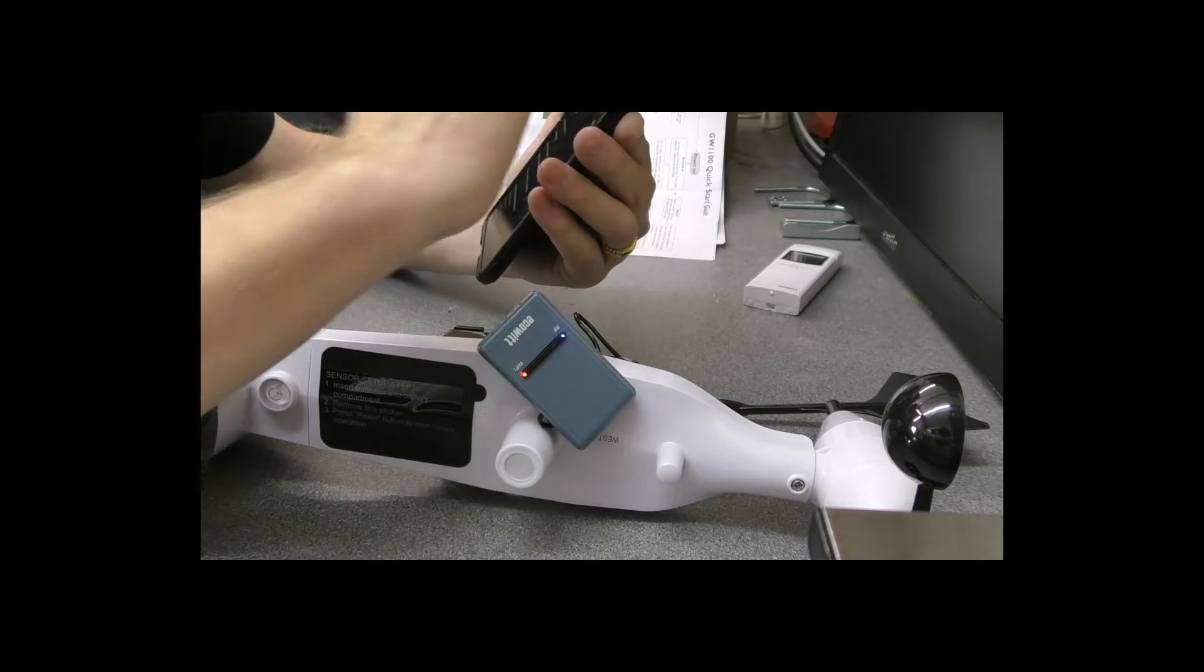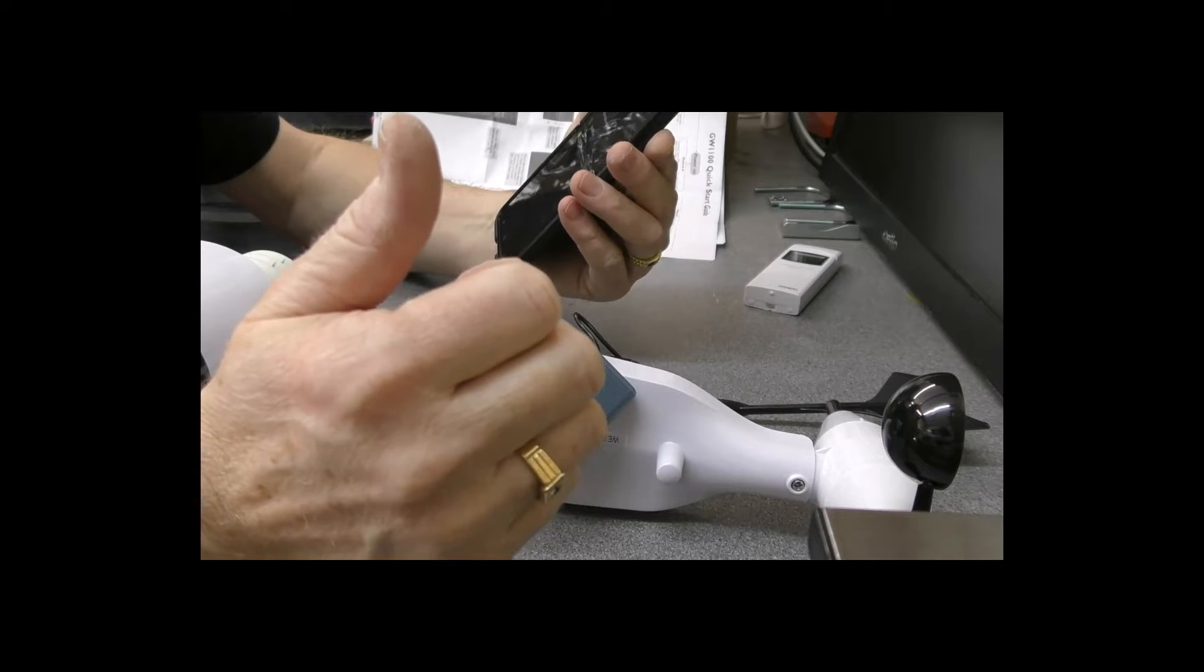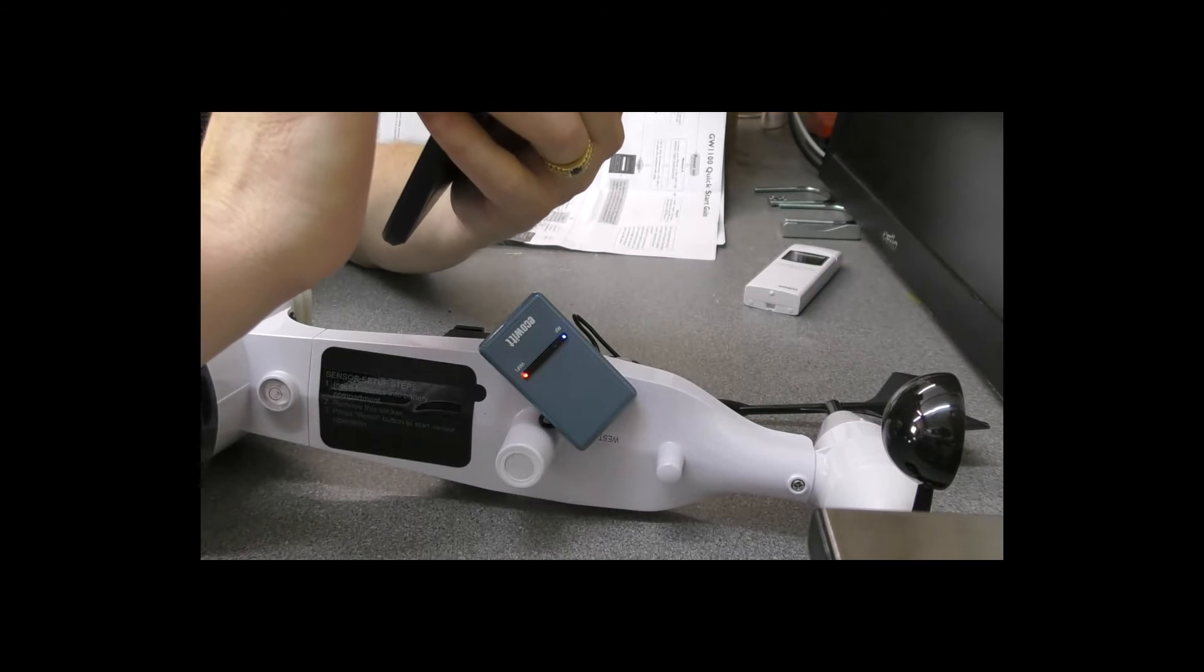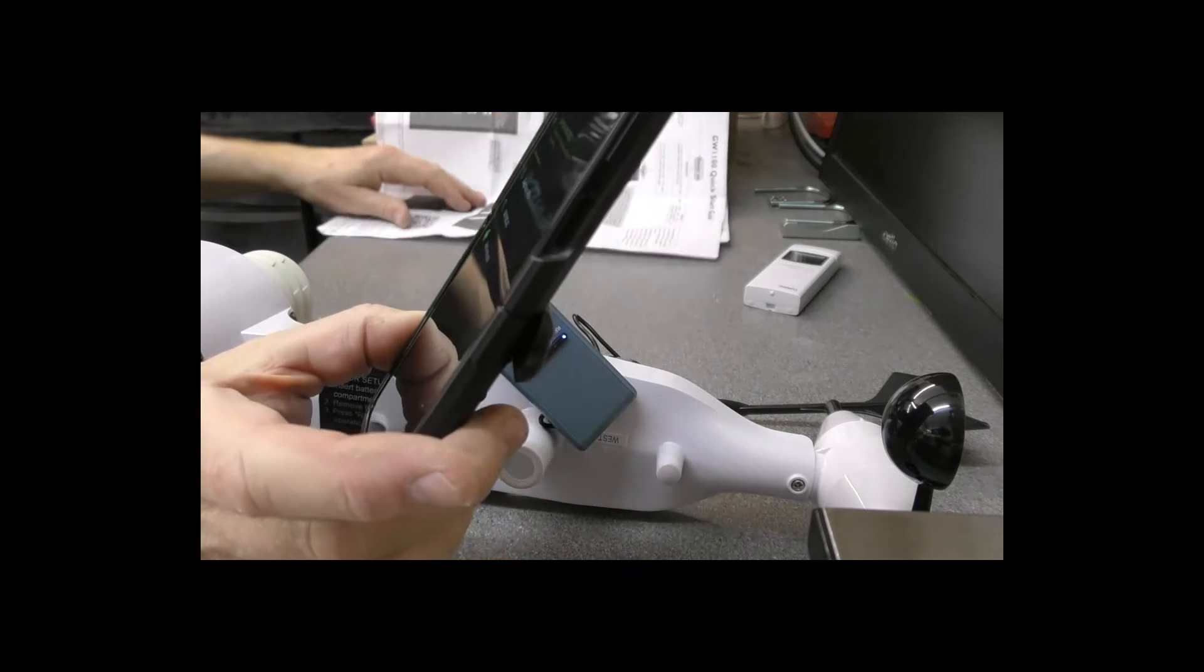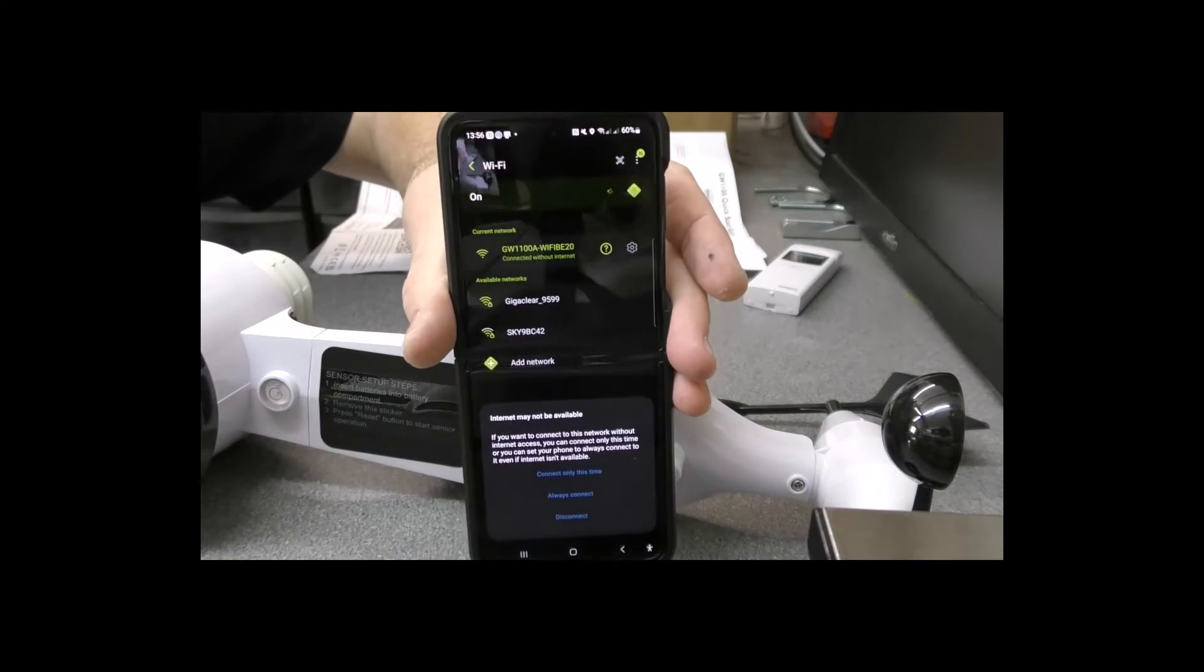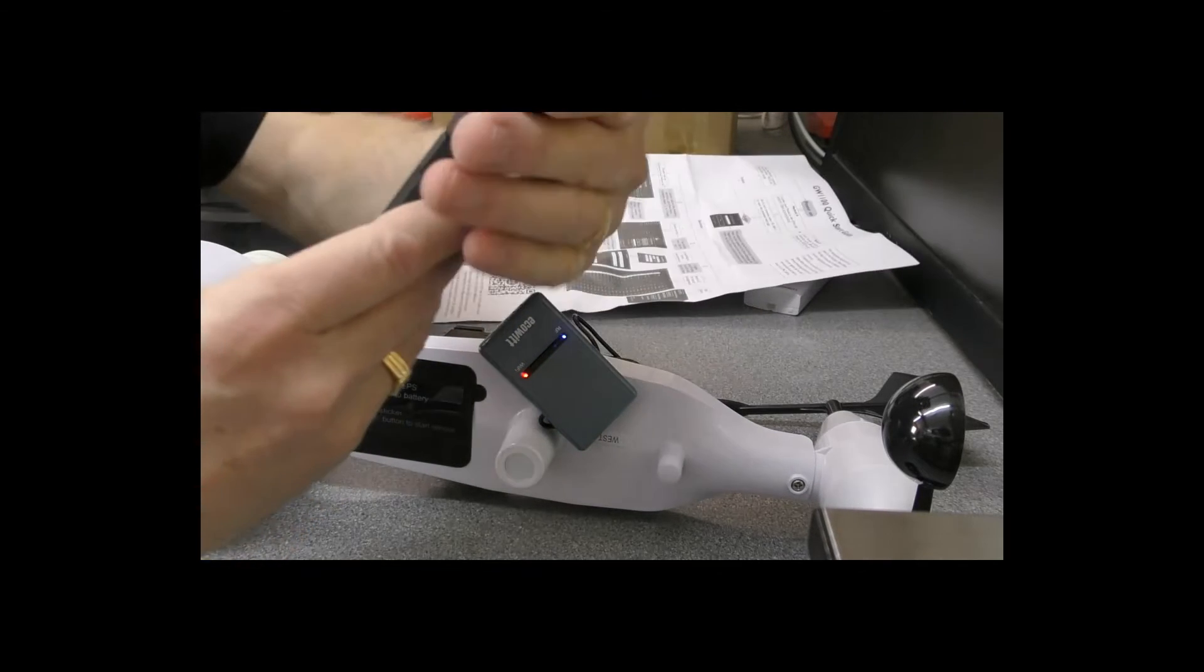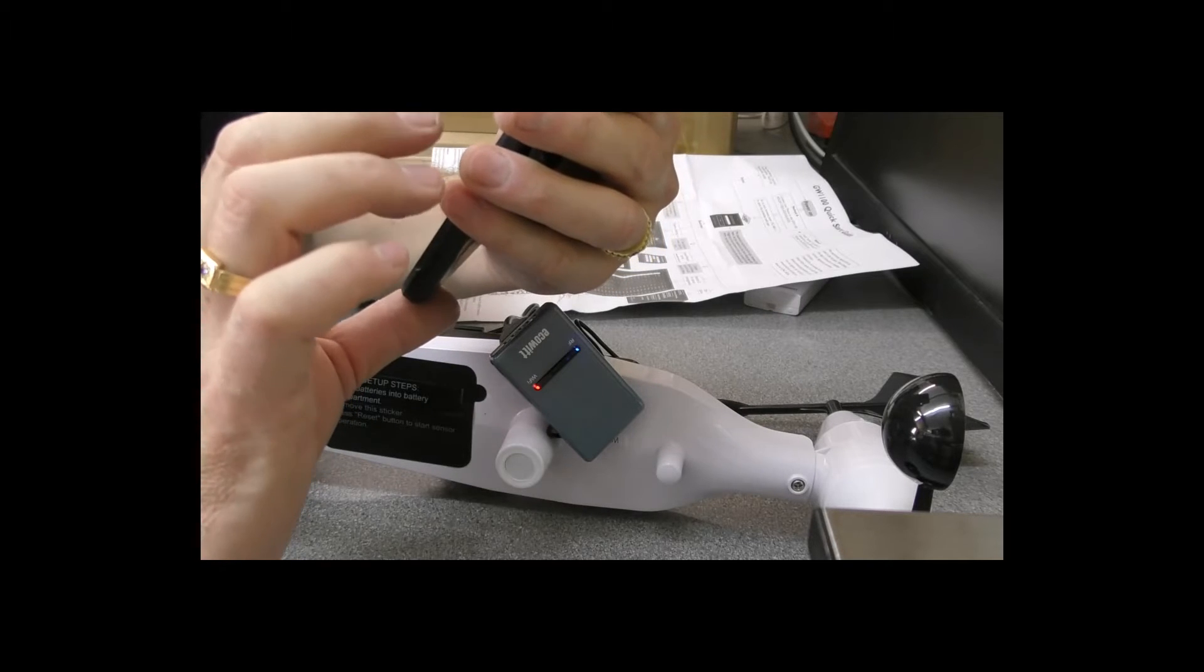We're going to look for the Wi-Fi connection, and in this case it is the first one that comes up - that GW1100 right at the top. We're going to click on that. It says connecting, checking your connection, connected without internet - that's absolutely fine.